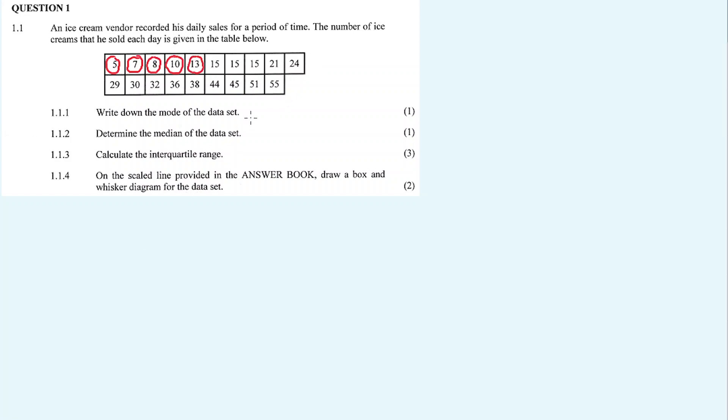For how many days? I count 1, 2, 3, 4, 5, 6, 7, 8, 9 — so 19 days. For a period of 19 days, we recorded the ice cream sales. Now 1.1.1: write down the mode of the data set.